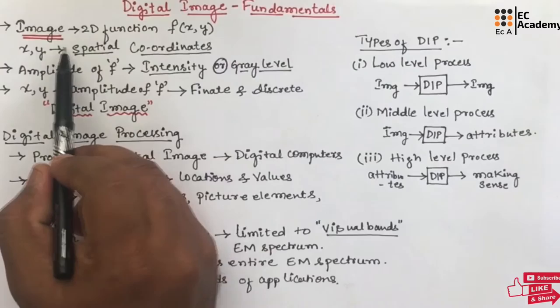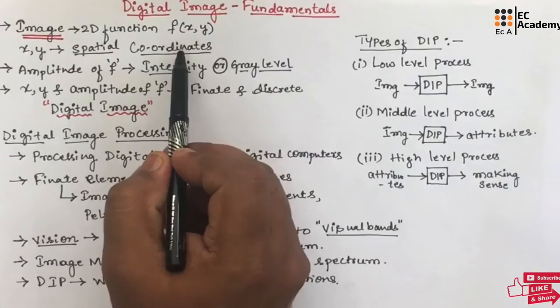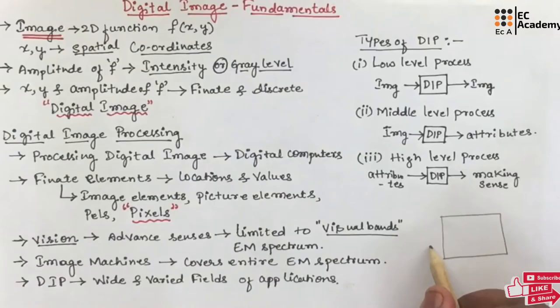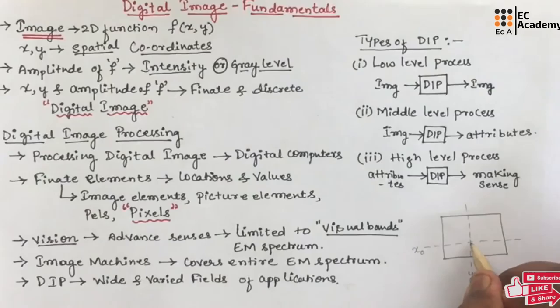An image can be defined as a two-dimensional function f of x, y, where x, y are known as spatial coordinates. For example, if we consider an image and we read along the x-axis and y-axis, if we call the x-axis as x0 and y-axis as y0, then this point is f of x0, y0.